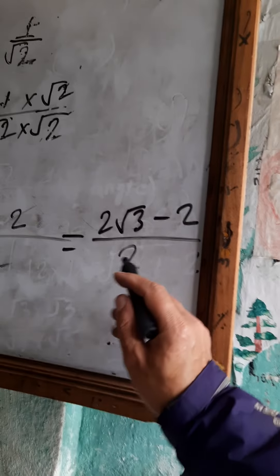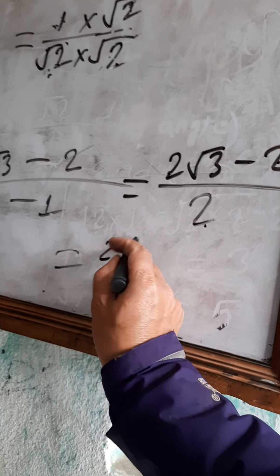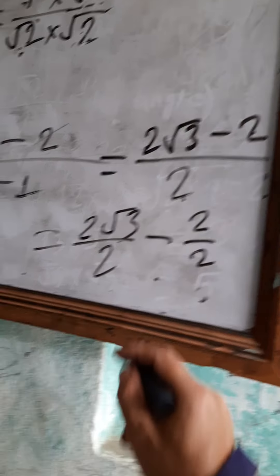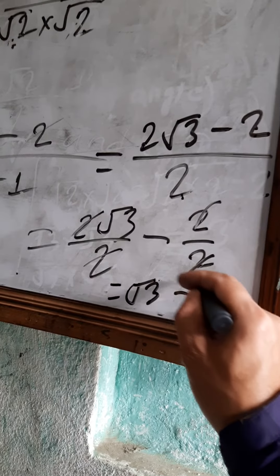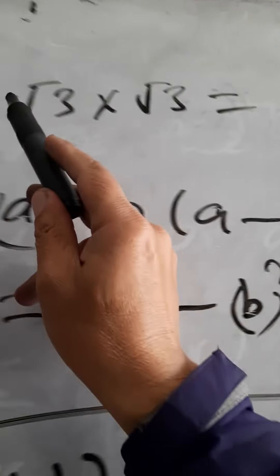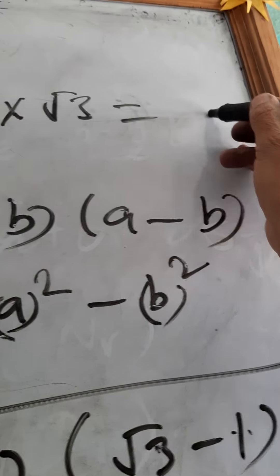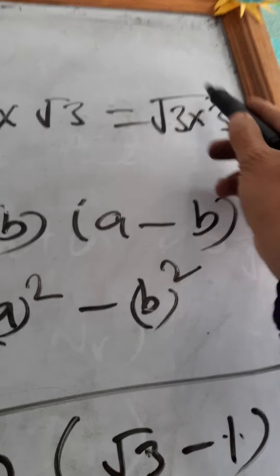3 of the root 3, but we don't have the expression number. This is root 3. 2 root 3 by 2 minus 2 by 2. Now we cut the root 3. This is root 3.